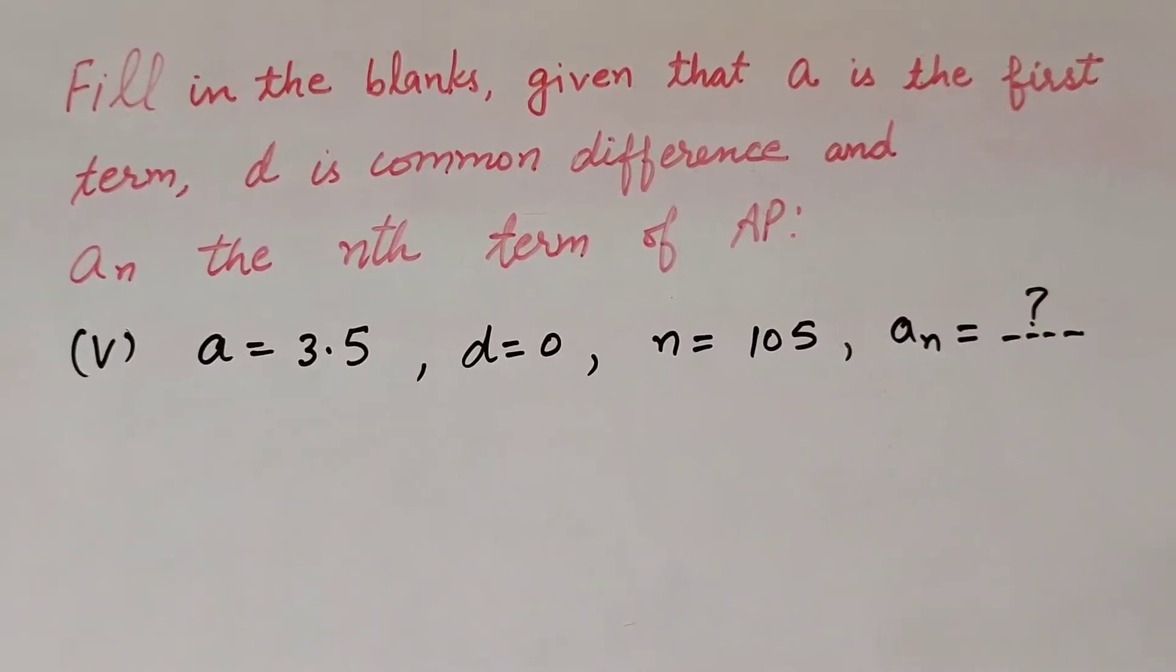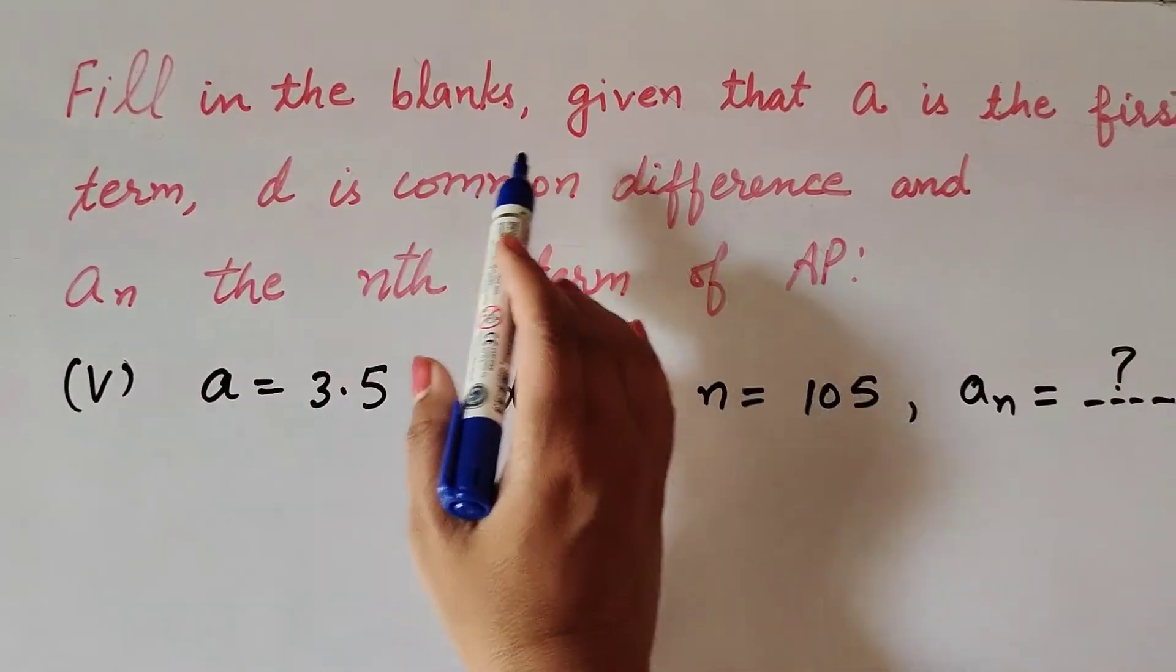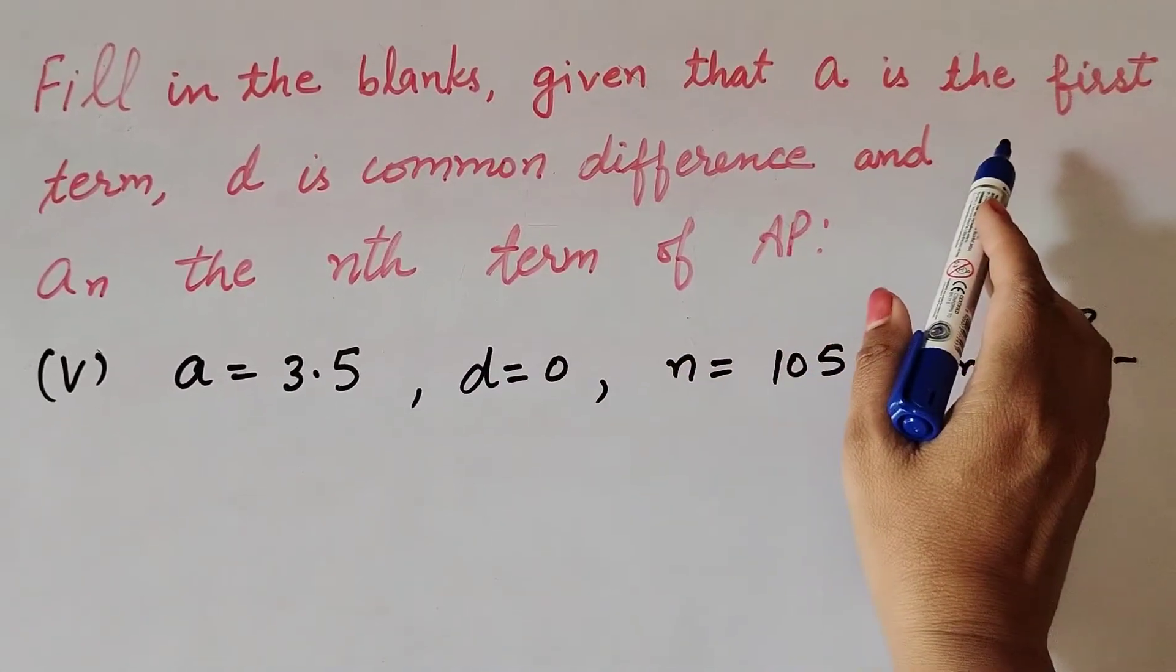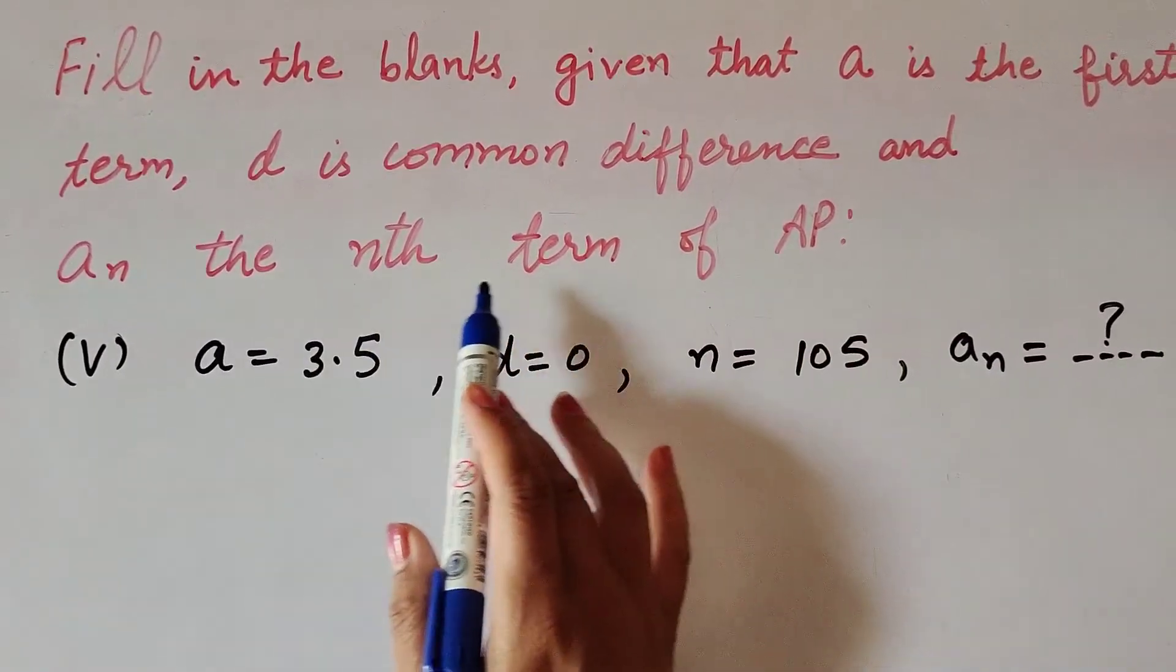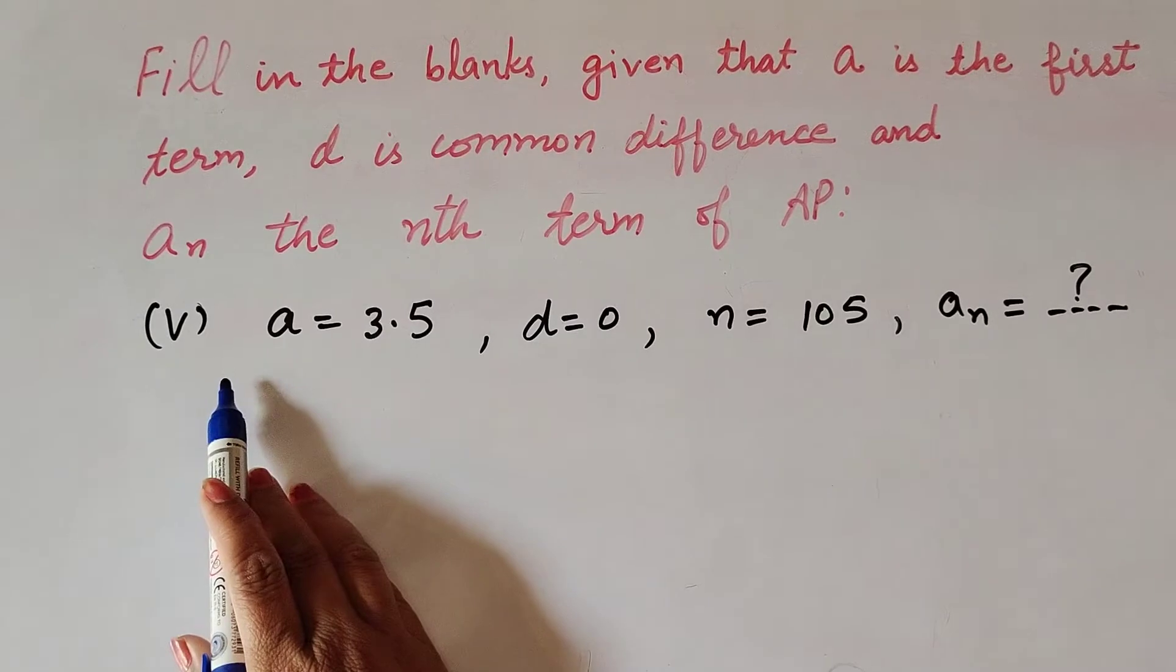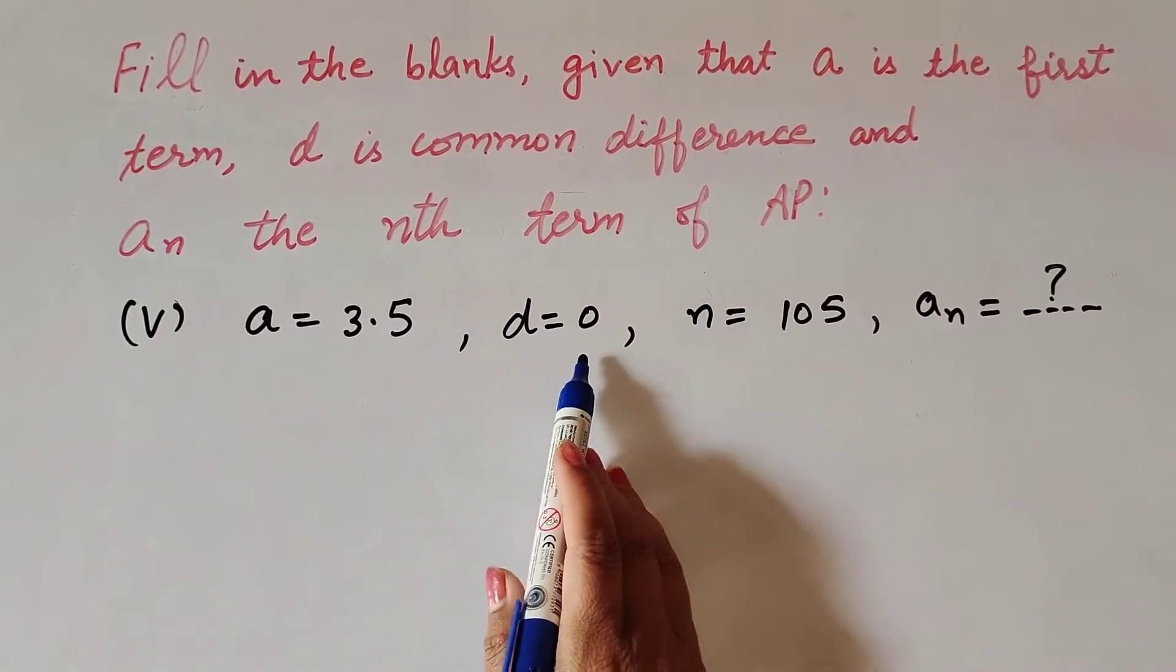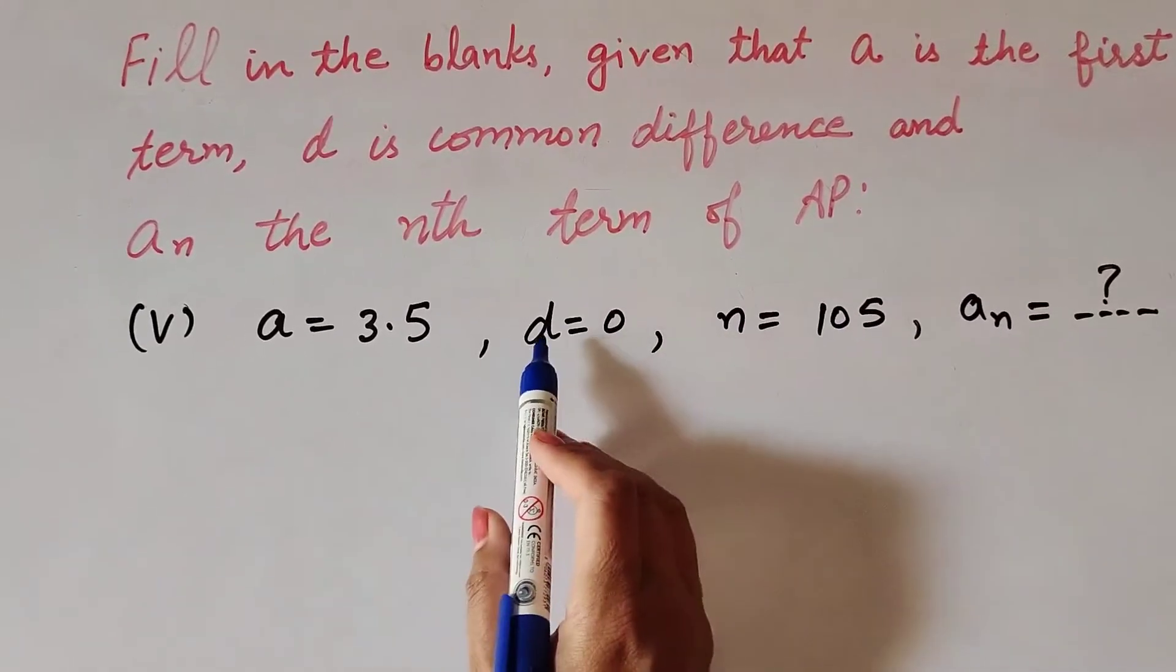Hello friends, welcome to my channel. In this video we discuss fill in the blanks, given that a is the first term, d is common difference, and an is the nth term of AP. In question number 5: a equals 3.5, d equals 0, n equals 105, and an is what we have to find.